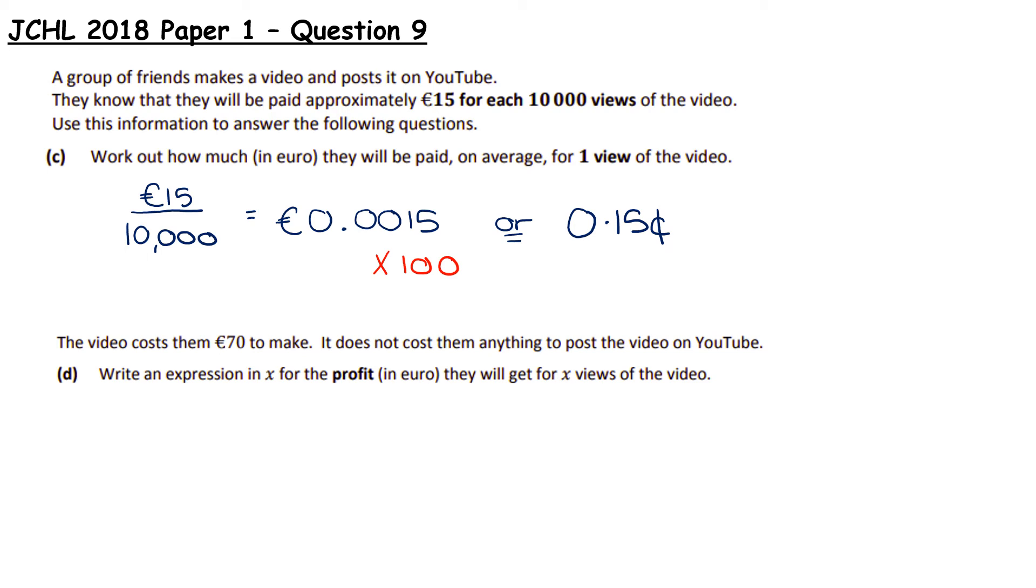So the video costs €70 to make. It does not cost anything to post a video on YouTube. Write an expression in X for the profit they will get for X views of the video. So now we're really getting into this idea of our word problems. So the video costs €70. That's not going to change. What does change is how much they get for each view. So we've just worked out that they get €0.0015 per view. And if I told you they got 100 views, we'd multiply by 100. If I told you they got 1,000 views, we'd multiply it by 1,000. These are based off X views. So we're going to have 0.0015 multiplied by X, which means I can just put the X beside it.